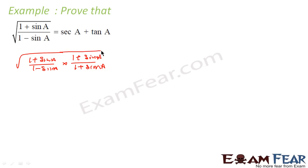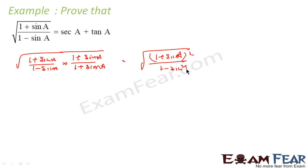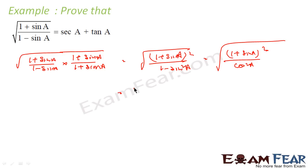So this becomes √((1 + sinA)² / (1 − sin²A)). Now, (1 − sin²A) is nothing but cos²A. And this is (1 + sinA)². The whole thing, if you take the root, this is nothing but (1 + sinA) / cosA. The root is gone. This is nothing but secA + tanA, and that is the answer.